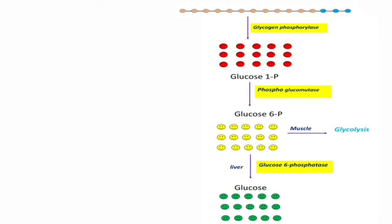Now, we have a linear chain of glycogen. That linear chain is again acted upon by glycogen phosphorylase. When glycogen phosphorylase acts, we know that it removes the glucose units in the form of glucose-1-phosphate. This glucose-1-phosphate is converted to glucose-6-phosphate by phosphoglucomutase.